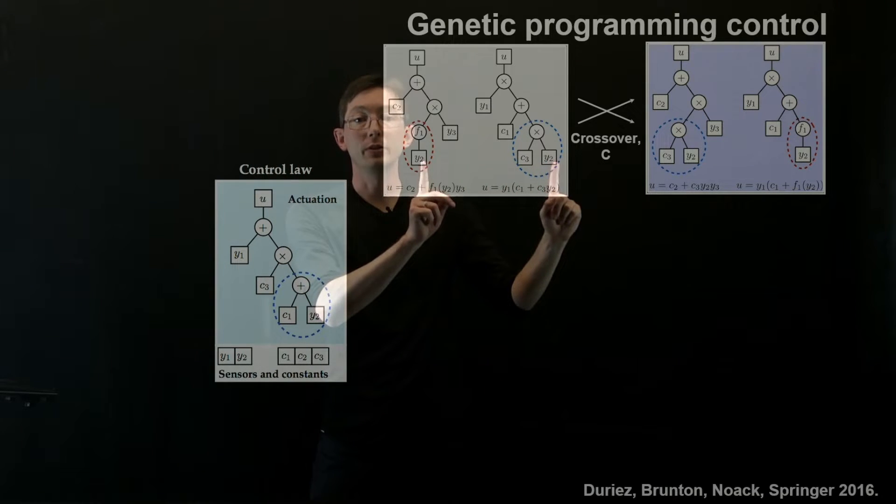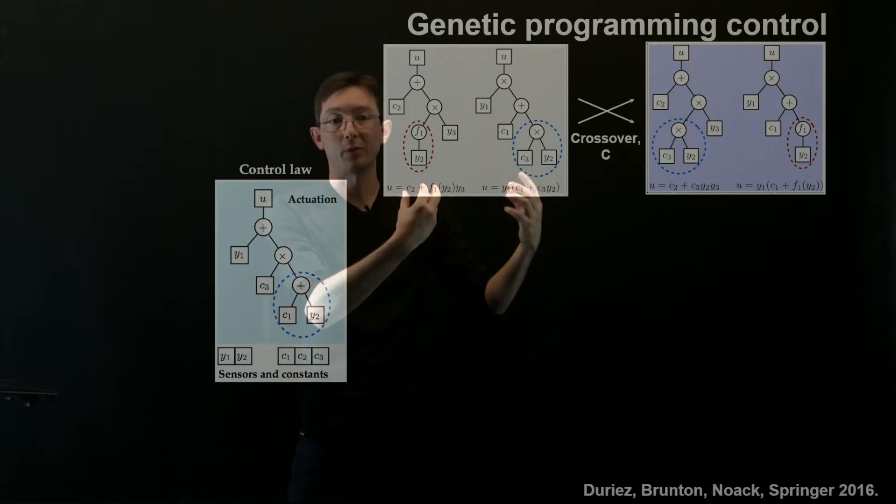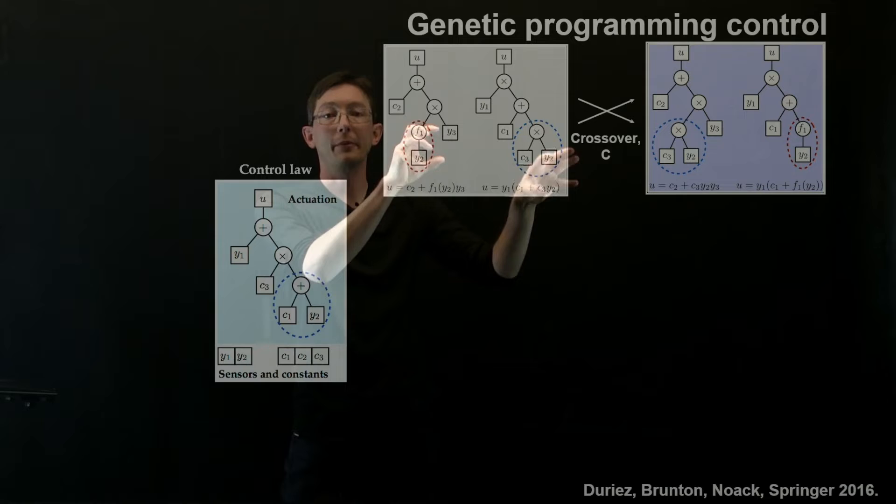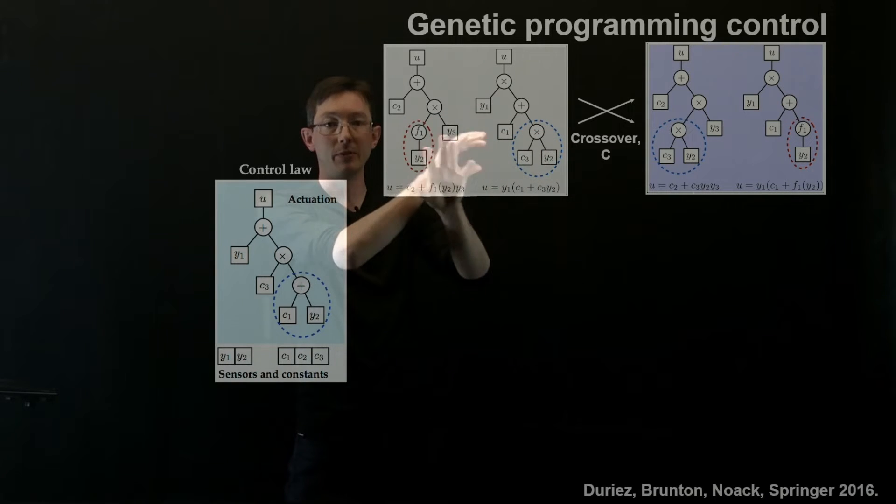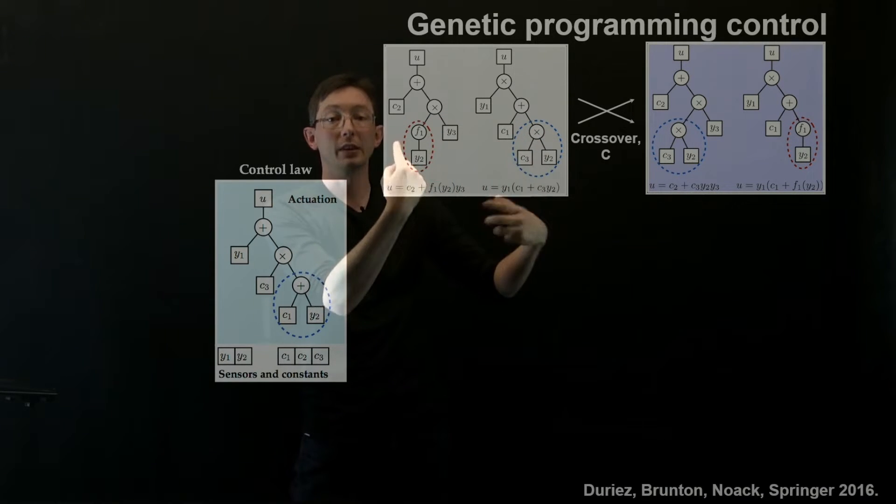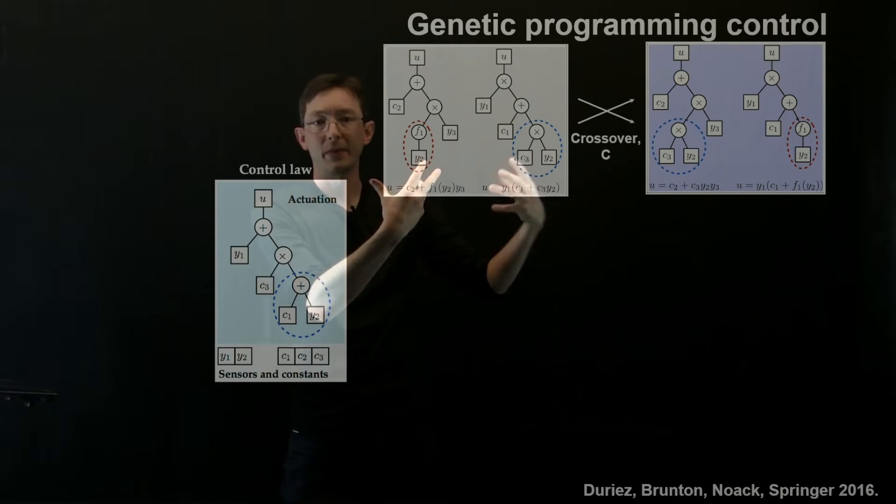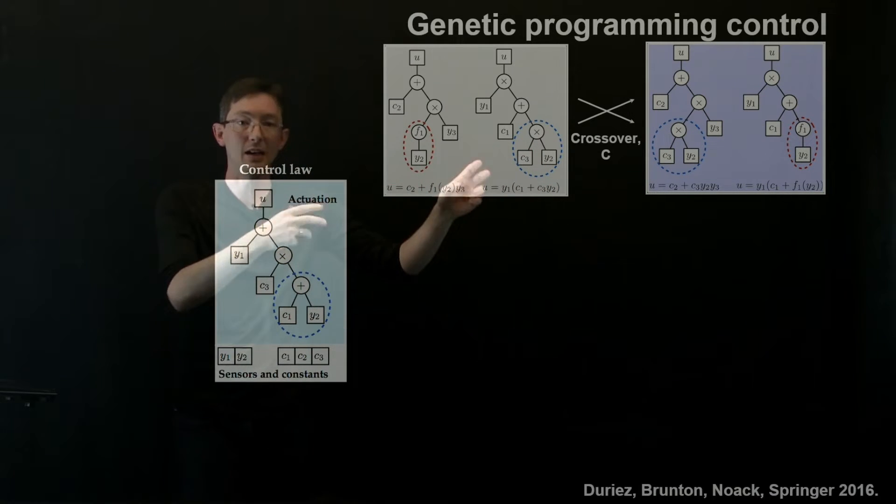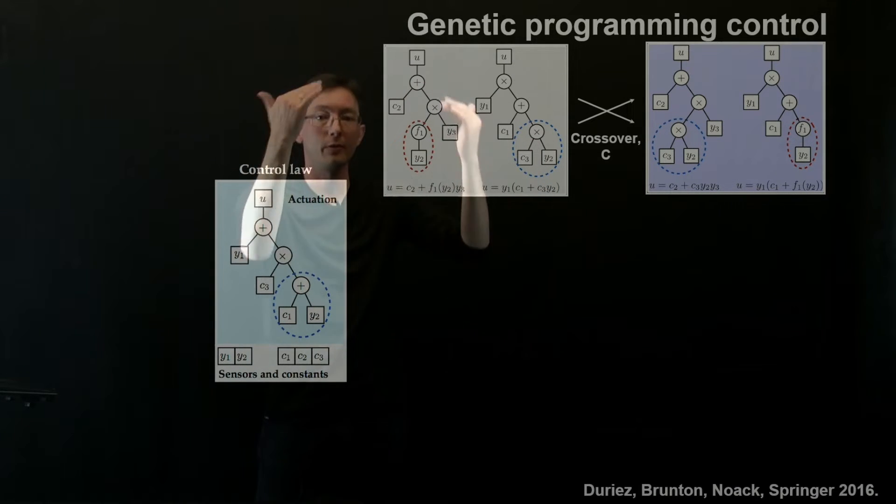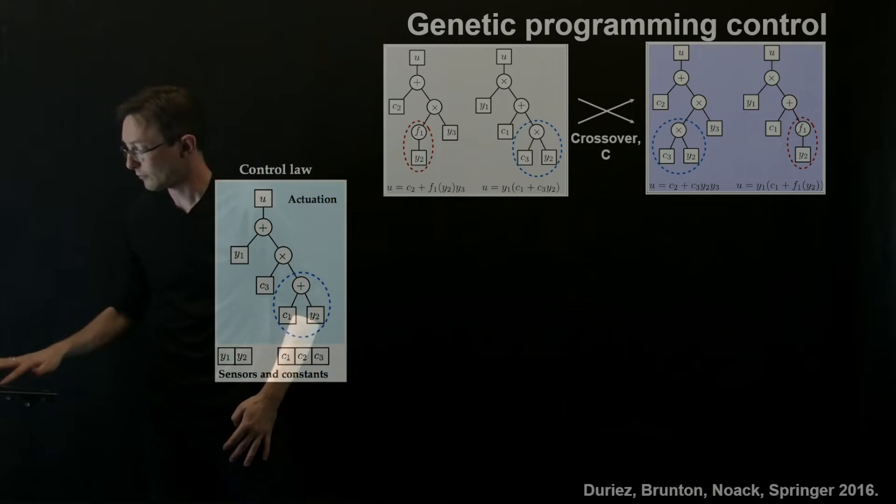And it's known to have this exploitative property that if both of these are good, I'm going to try and perturb these and permute these to exploit the favorable properties of both of these. Now it doesn't always work, but sometimes swapping these will give you even better performance in the children.